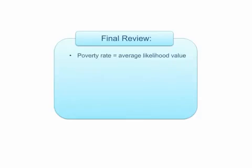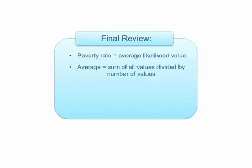Here are the key lessons you should take away from this presentation. To find the poverty rate among a group of households surveyed with the PPI, average all the households' poverty likelihood values, and that percentage represents the percentage of the group living below the poverty line. To find an average, divide the sum of all values by the number of values. Do not average the PPI scores — average the likelihood values.